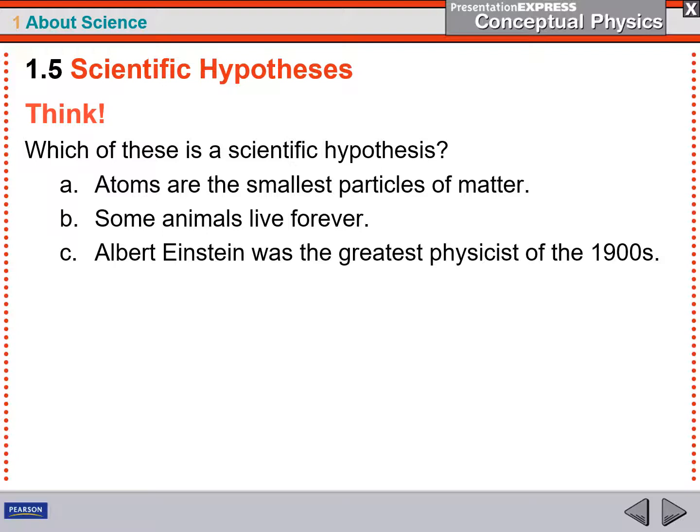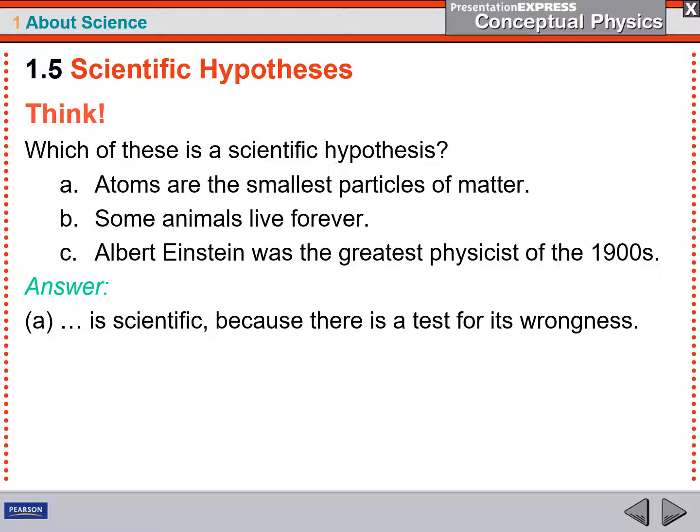In the first statement, atoms are the smallest particles of matter. That is scientific because there's a way to test and there's also a way to show is potentially wrong. If you find particles smaller than atoms, which we have, then that statement is no longer taken to be scientific. It was a great scientific hypothesis because it was testable and it was falsifiable, but it is wrong. And so we throw that out and modify our theory.